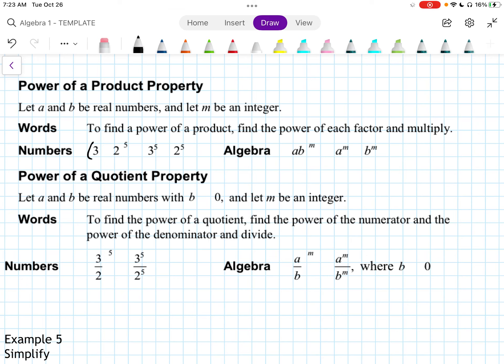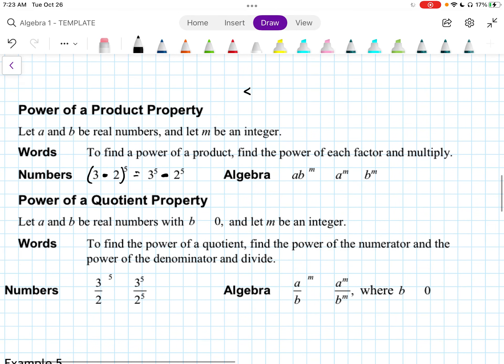So this here, using numbers, we'd say 3 times 2 to the 5th would be 3 to the 5th times 2 to the 5th. It's almost like distributing, right? Distributing, we normally think about whenever we have something like 5 times 6 plus x, and we distribute the 5.